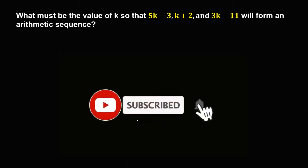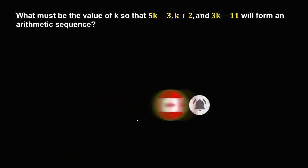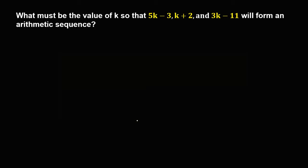So let's solve this problem. What must be the value of k so that 5k minus 3, k plus 2, and 3k minus 11 will form an arithmetic sequence?